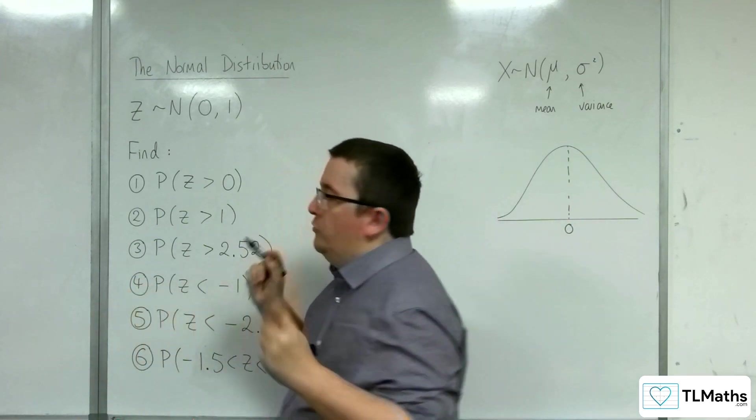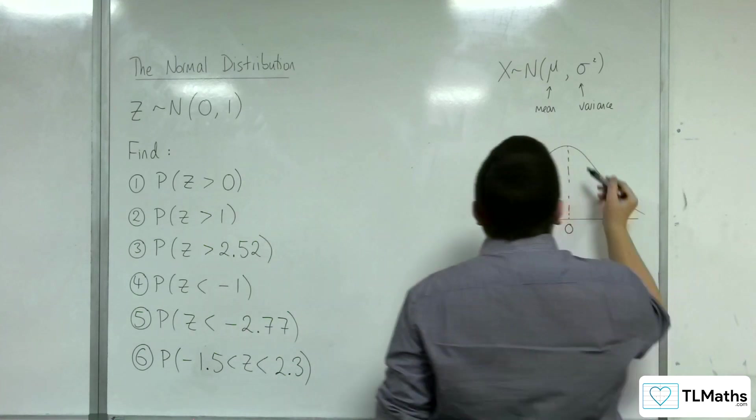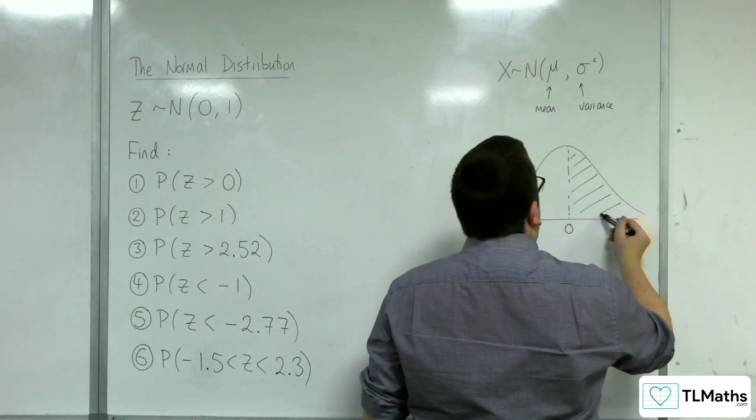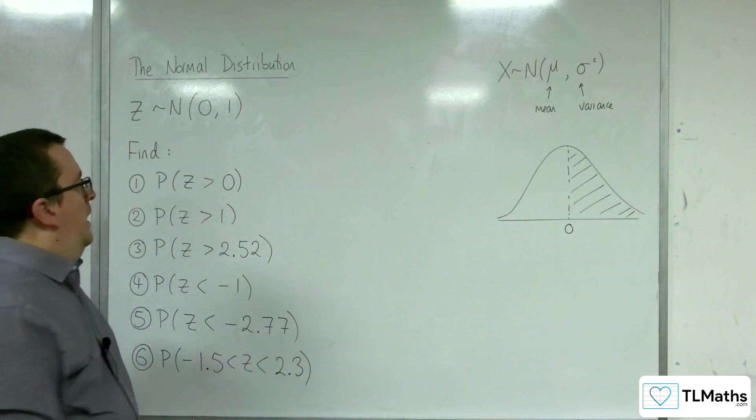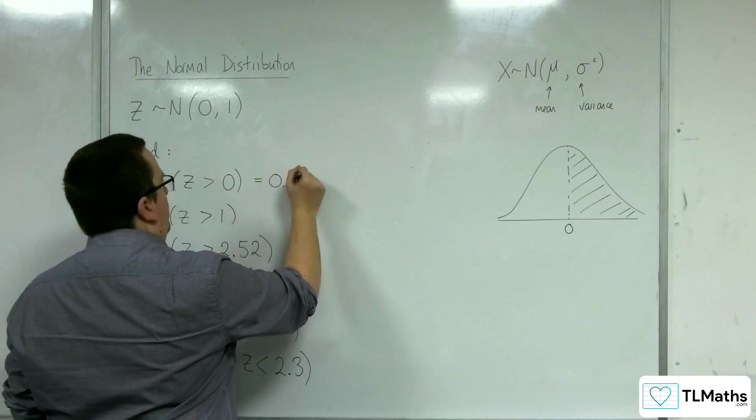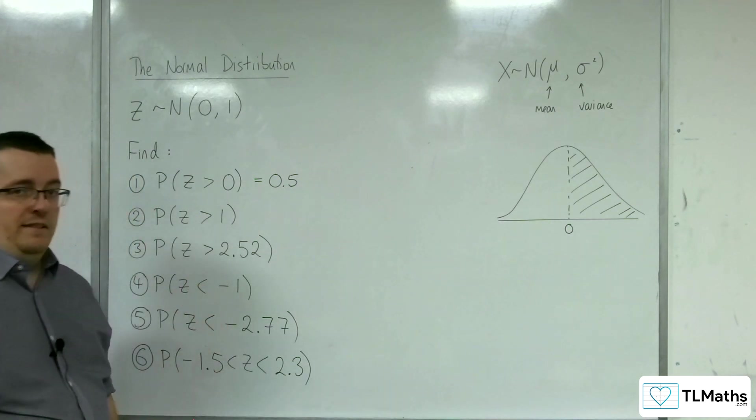So we should be able to directly go to number one and ask, what's the probability of Z being greater than zero? Well, how much have I shaded? I've shaded half of the diagram, and so this is just 0.5.